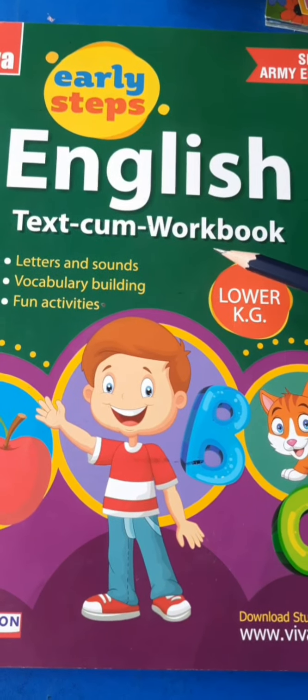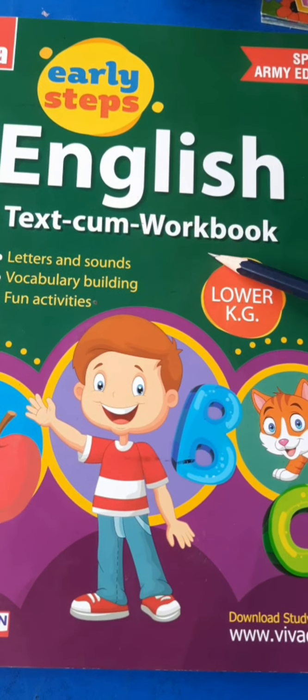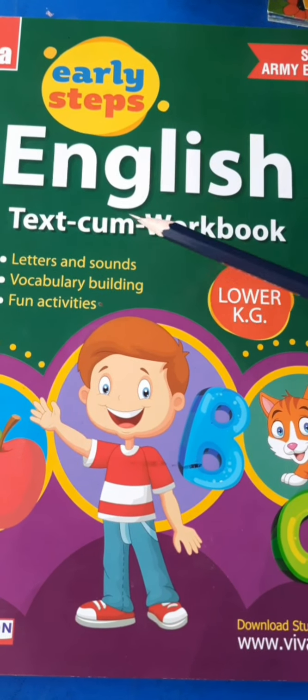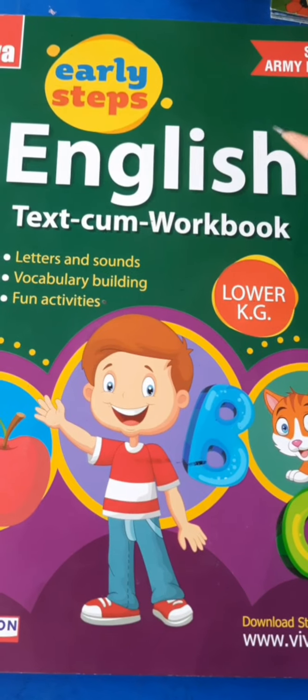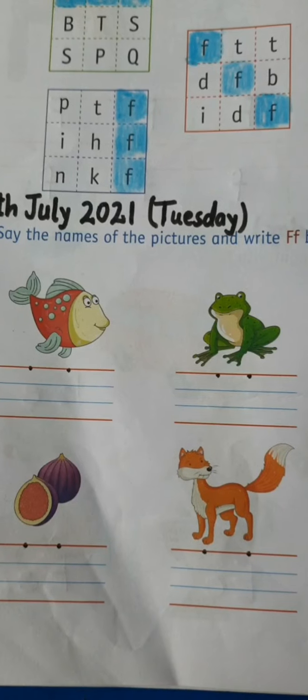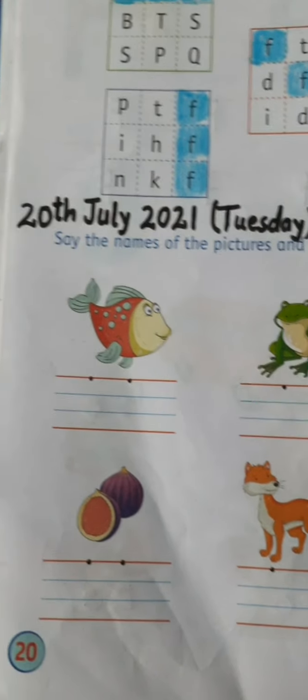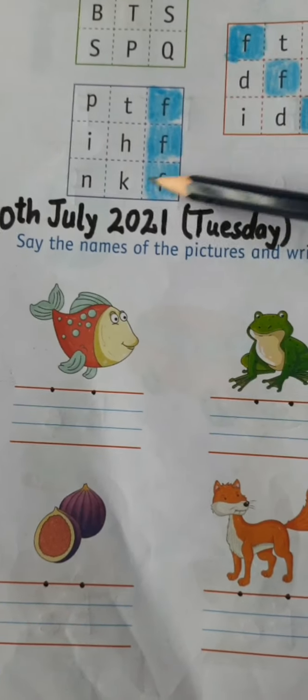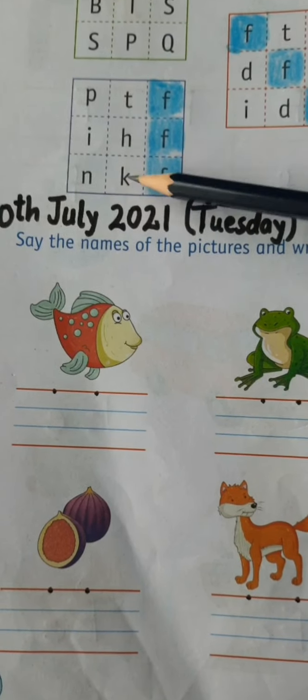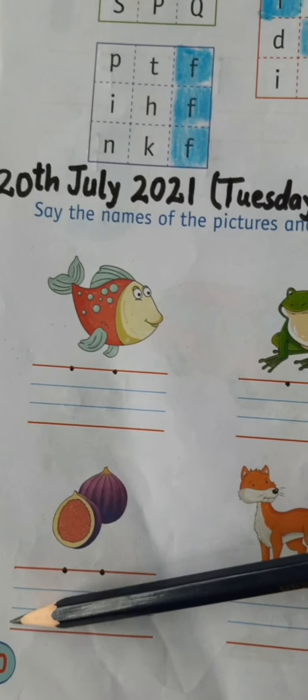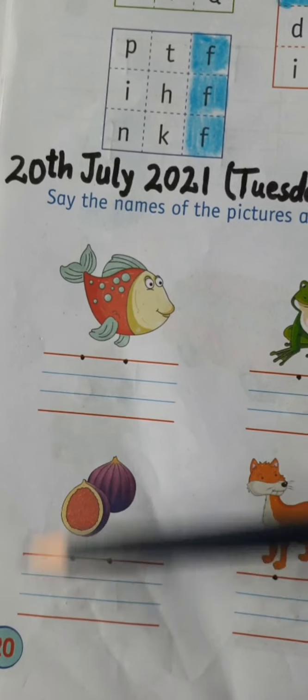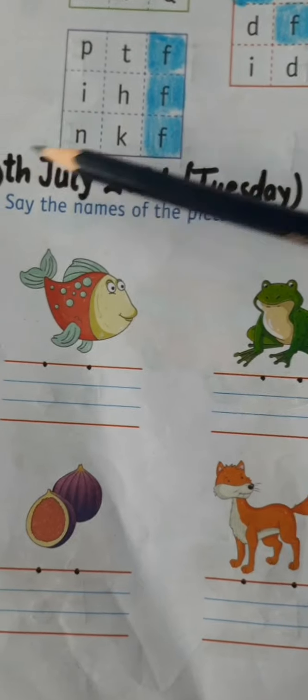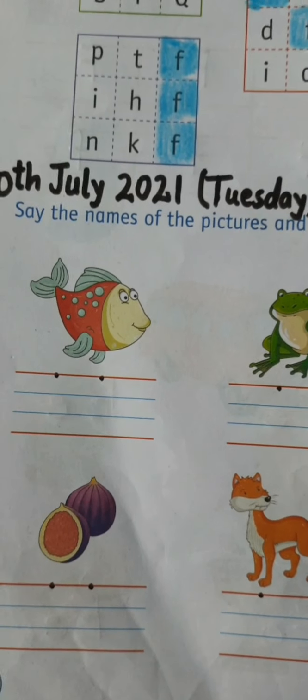So dear children, this is your English workbook. So today we are going to do our worksheet in this. So take out your page number 20. And what is the date today? Today is 20th of July. We are going to do our worksheet on page number 20. And today date is also 20th of July. So day is Tuesday.